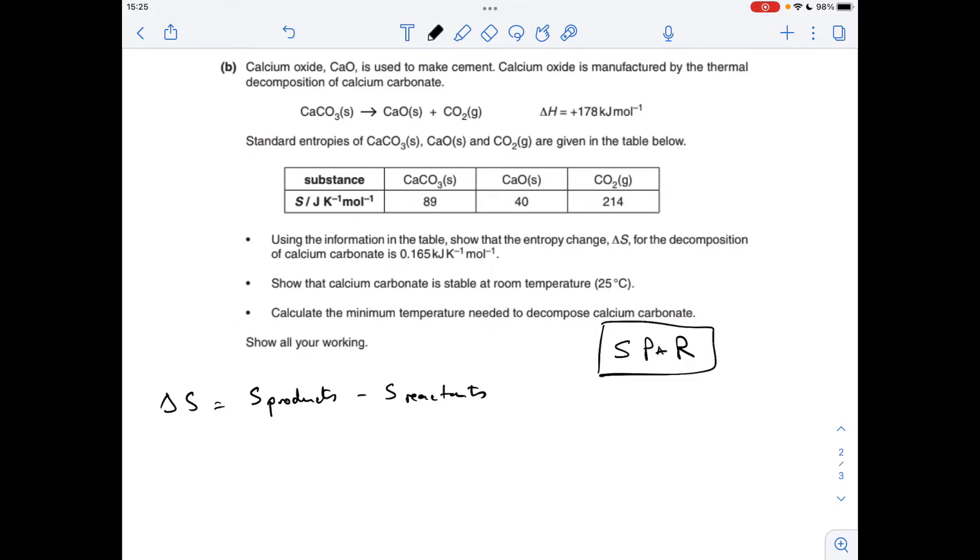Putting the numbers in, we get 40 plus 214 for the products minus the entropy of the only reactant, which is calcium carbonate, minus 89. The units are going to be joules per kelvin per mole because that's what they are in the table there. Obviously, to get it into kilojoules per kelvin per mole, we divide by a thousand.